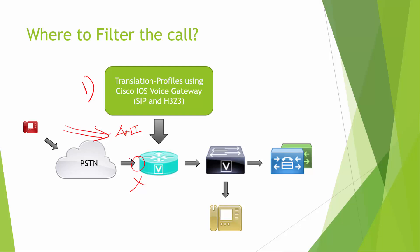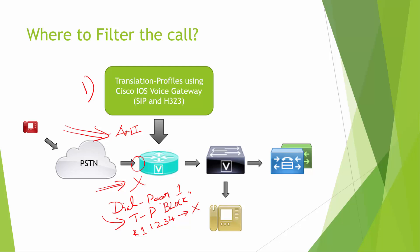How it works: we create dial peers and apply the translation profile — for example, a profile named 'block' — on the inbound dial peer. As soon as a call comes in, it looks up the translation profile. If the ANI is 1234 and it matches the rule we defined, that call would be blocked. This is one method to filter calls on the Cisco IOS voice gateway.